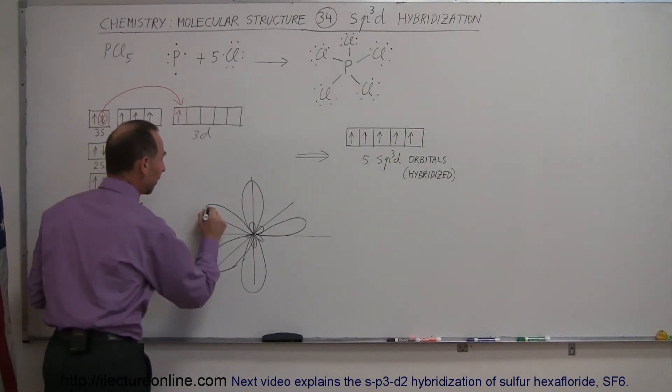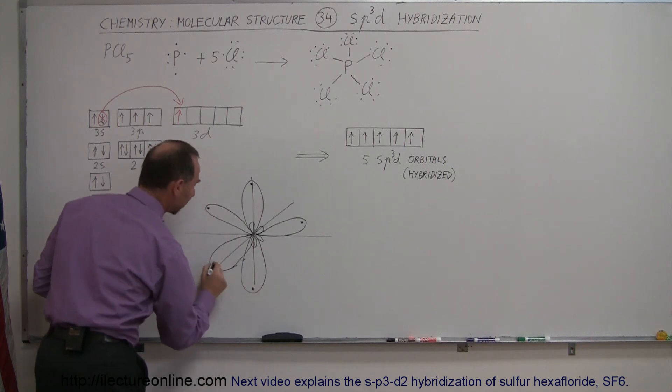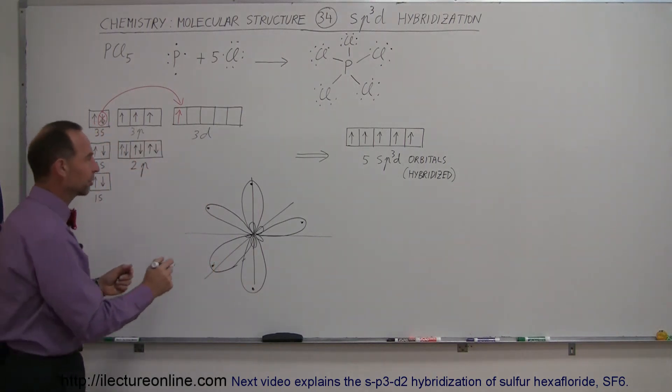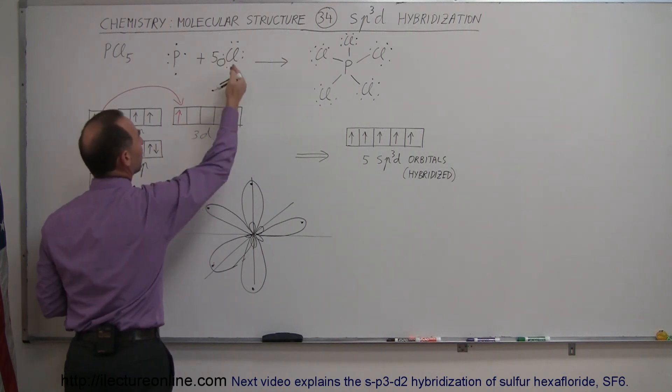Since each one of those will have one valence electron, every one of those is now available for bonding. And you can see then that if five chlorine atoms come along, they all require just one additional electron to make a bond.